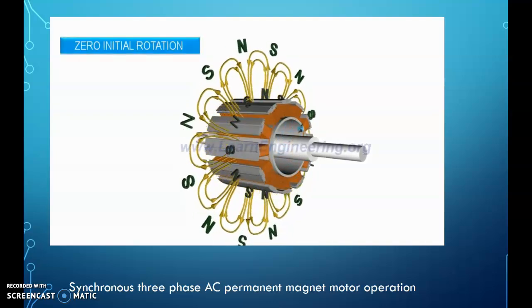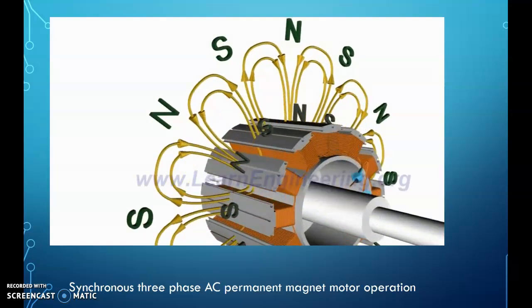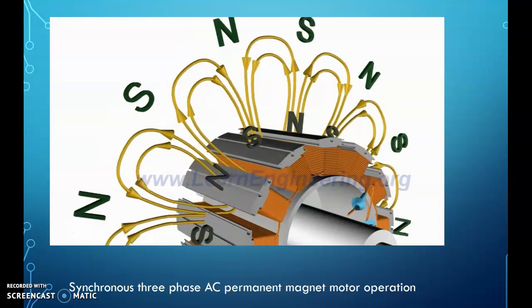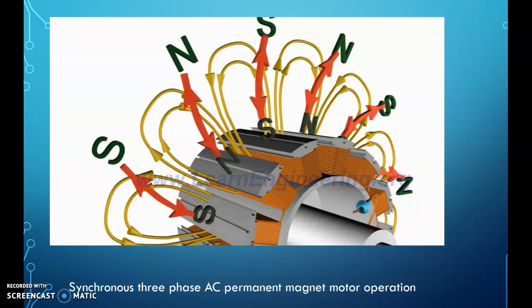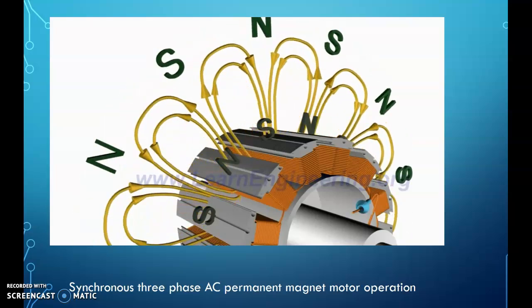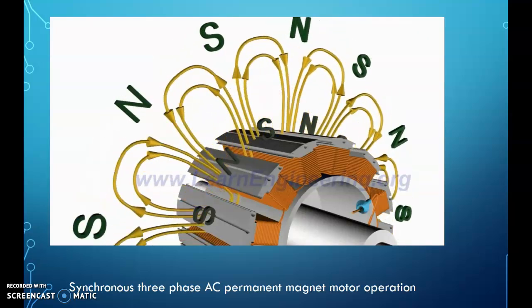But if the rotor has got no initial rotation, situation is quite different. North pole of the rotor will obviously get attracted by south pole of RMF, and will start to move in the same direction. But since the rotor has got some inertia, this starting speed will be very low. By this time, south pole of RMF will be replaced by a north pole, so it will give repulsive force. As a net effect, rotor won't be able to start, or synchronous motors are not inherently self-starting.